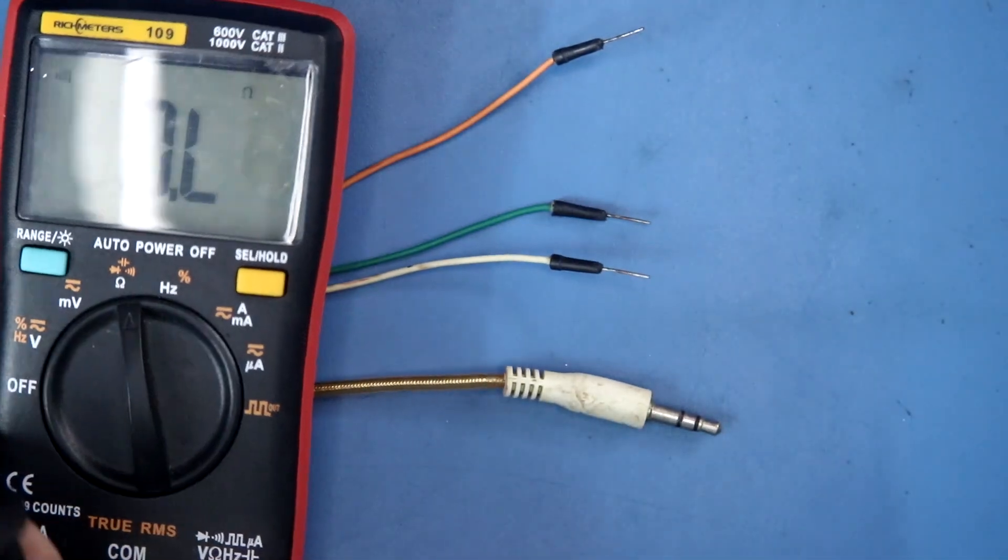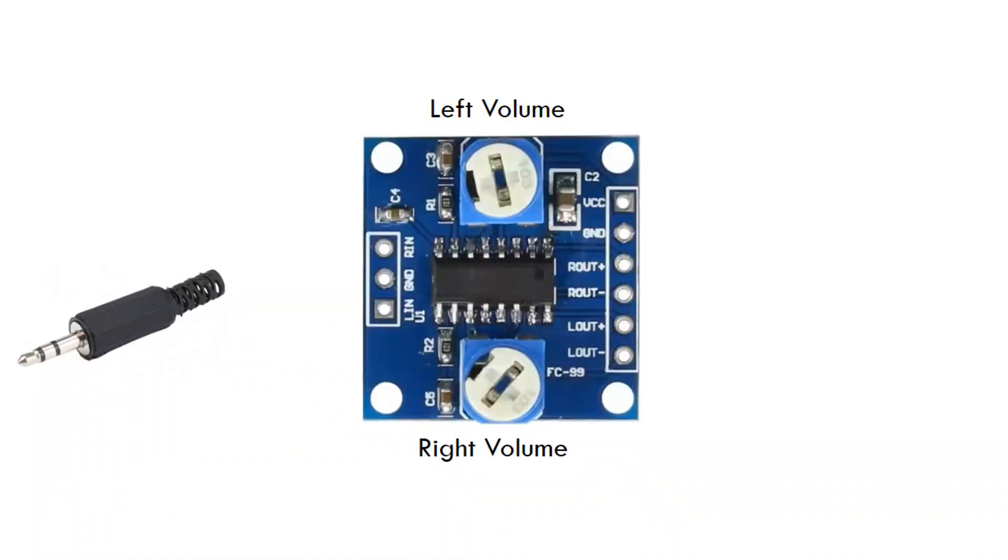The ground pin of the audio jack should be connected to ground. The right pin should be connected to right in, and the left pin should be connected to left input.